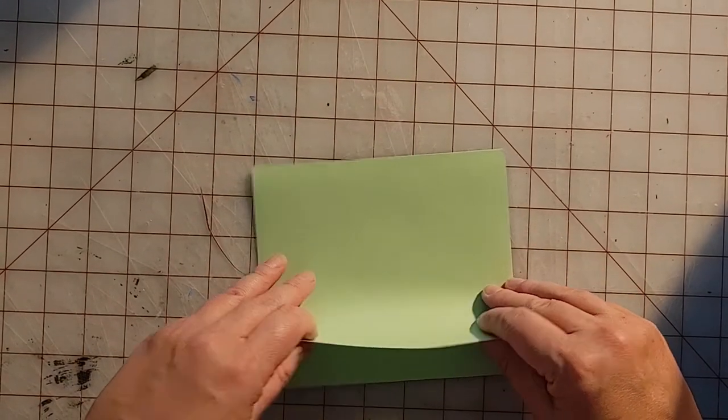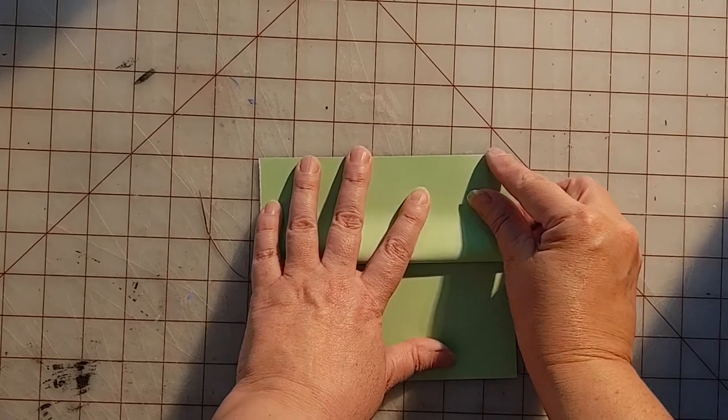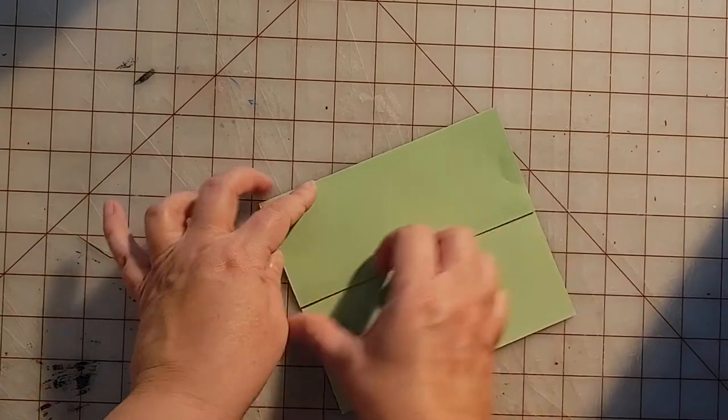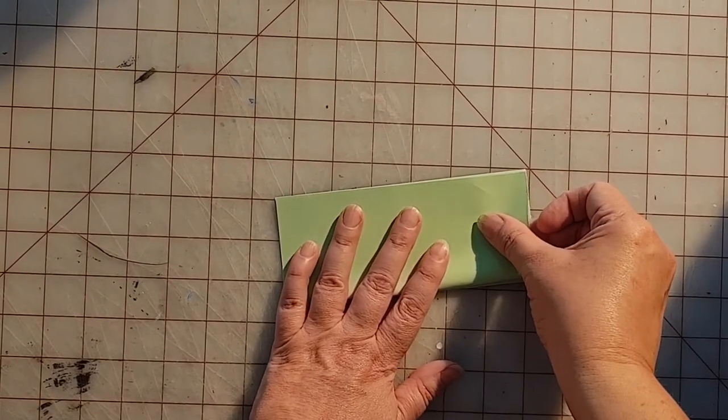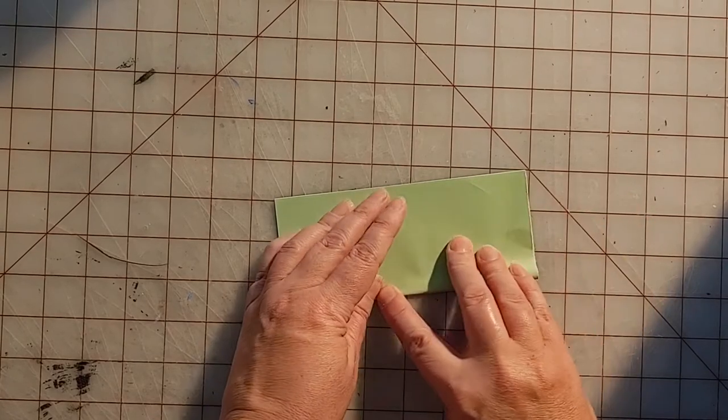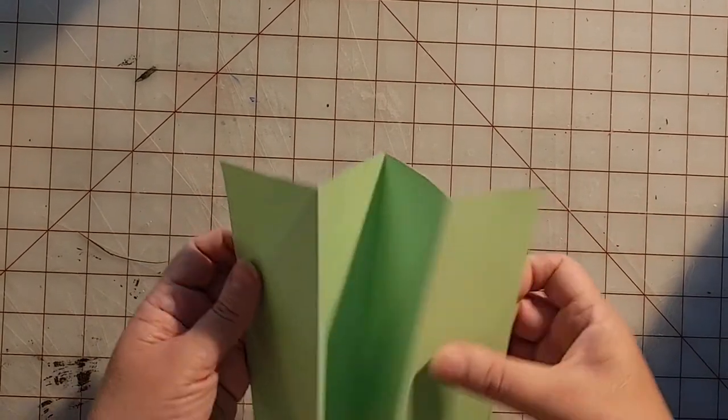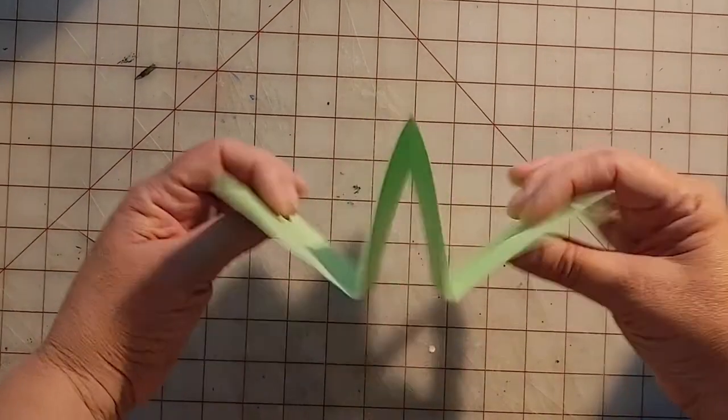Then I'm going to fold these edges back to the middle. So you have a valley and two mountain folds.